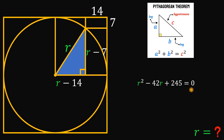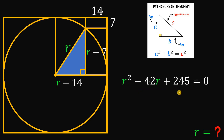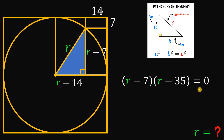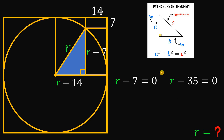We have a quadratic equation in terms of r. Since 245 factors as negative 7 times negative 35, and negative 7 plus negative 35 equals negative 42, the factored form is (r minus 7)(r minus 35) equals 0. By the zero product property, at least one factor must equal zero, so r minus 7 equals 0 or r minus 35 equals 0.